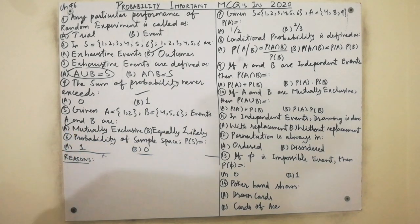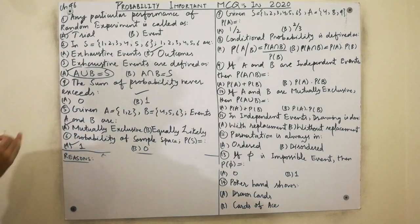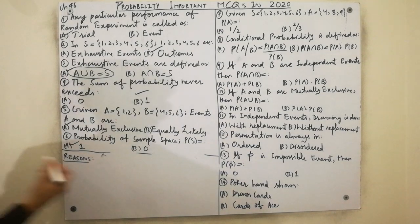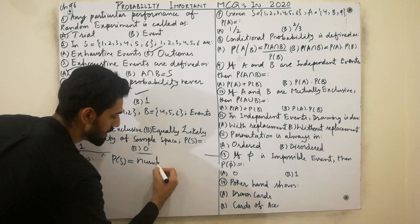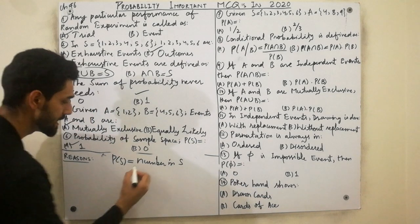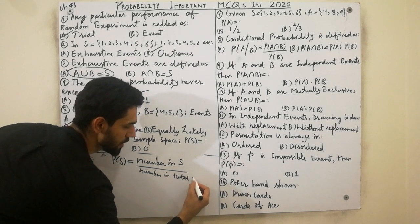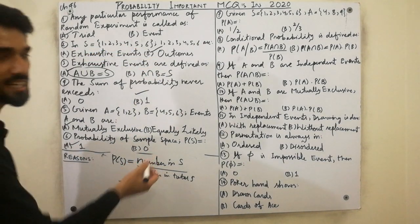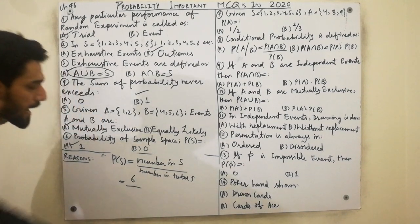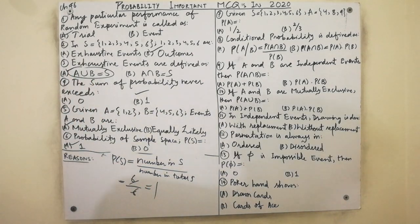MCQ six: the probability of the sample space always equals 1. The reason: probability of sample space = number in sample space divided by total number in sample space. For a die, sample space has 6 elements, total sample space is also 6, so 6 divided by 6 equals 1. Must remember: probability of sample space always equals 1.